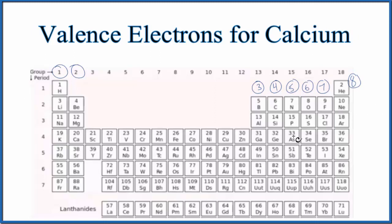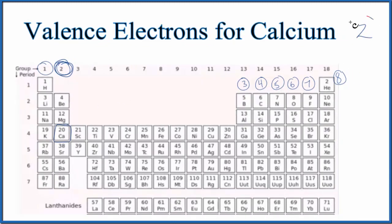The first is just to look at the periodic table. So calcium right here is in group 2. Elements in group 2, like magnesium and beryllium, they have two valence electrons. So according to the periodic table, calcium has two valence electrons.